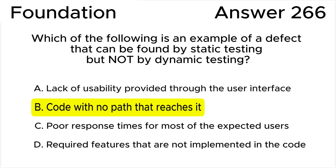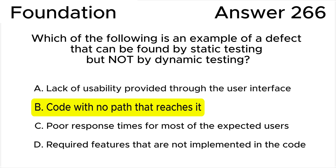Answer D is not correct because a review of the code by someone who is aware of the required features would detect that the required features had not been implemented in the code. Dynamic testing would also be used to determine that these required features had not been implemented.